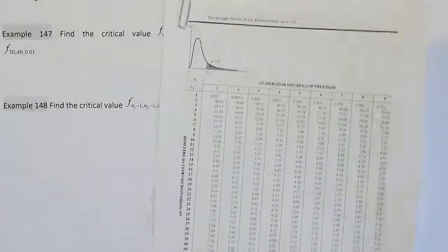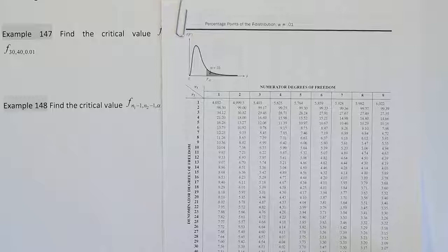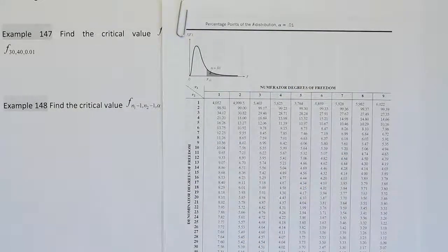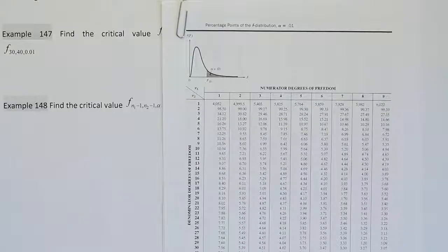So here's what this table kind of looks like. In this case it's two pages, the table, and you'll see that there's an alpha of 0.01. We're going to zoom in in a minute so we can look at this closer to get the value that we need.